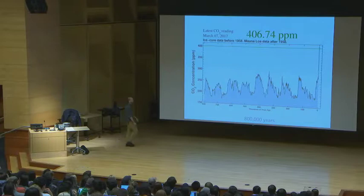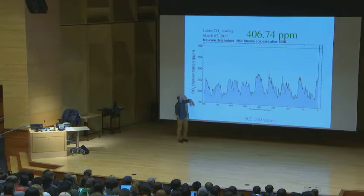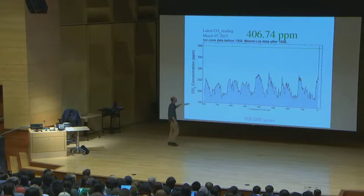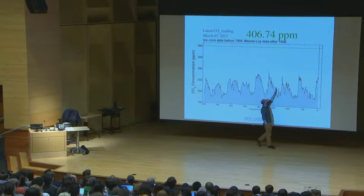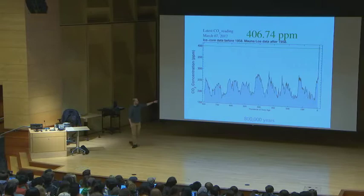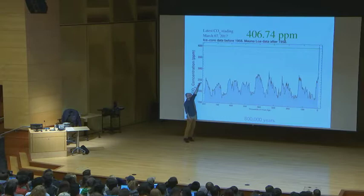To orient you a bit: when we talk about ice ages, there wasn't just one ice age — just like the movie, there are a bunch of them. Every time it dips down, those are ice ages; the moments between are called interglacials. Ice ages occur at around 180 parts per million CO2, and interglacials — the warm periods — at about 280 parts per million CO2.